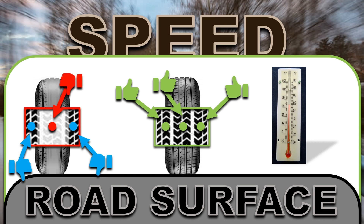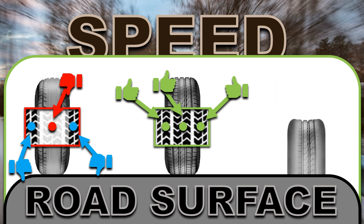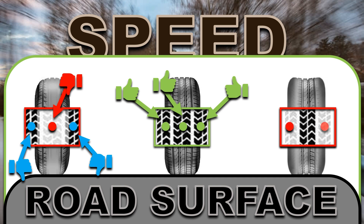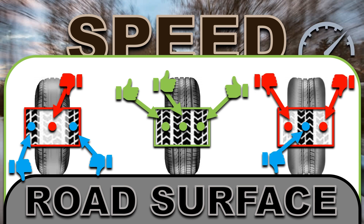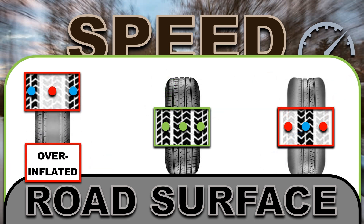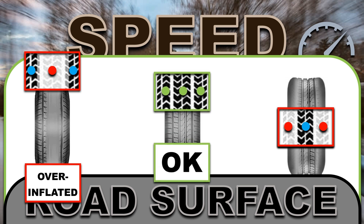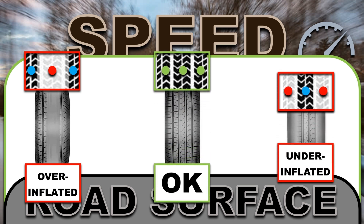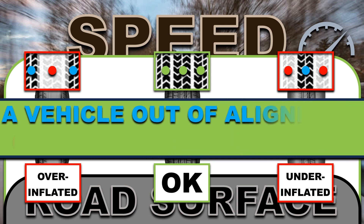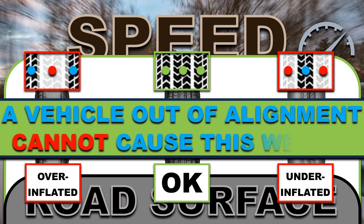Under-inflation will prematurely wear the edges of the tread, because the sidewalls will flex, planting the edges and flexing the center upward and away from the road. It's important to know these tread wear patterns and to understand that when you see them, they're not indicating the need for a vehicle alignment. Tires will need to be replaced, and a conversation with the customer regarding proper tire inflation is in order.